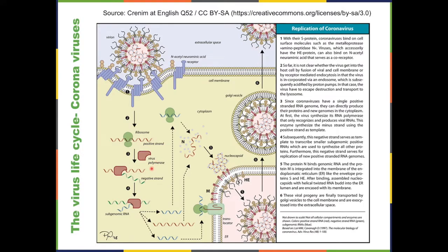A Golgi vesicle forms, fuses with the plasma membrane, and spits the new virus out. As you can see, the coronavirus life cycle, shape, components, and assembly process are quite different from the flu virus.